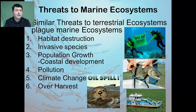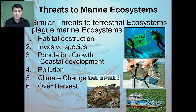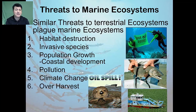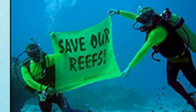Habitat loss is our first major issue to marine ecosystems. Over 90 percent of all fish species will spawn in coral reefs, mangroves, and coastal wetlands. These habitats are under particularly intense pressure from human activity, disappearing at a rate two to ten times higher than tropical forests. Sea bottom habitats are further destroyed by dredging and trawling operations.